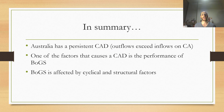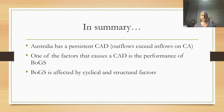In summary, Australia has a persistent CAD where outflows exceed inflows. One of the factors that causes a CAD is the performance of BOGS, which is affected by both cyclical and structural factors. This is quite a complex area, so go back, take it slow through those cyclical and structural factors, and make sure you understand how those factors lead to a current account deficit.